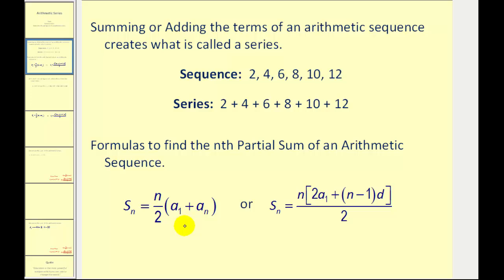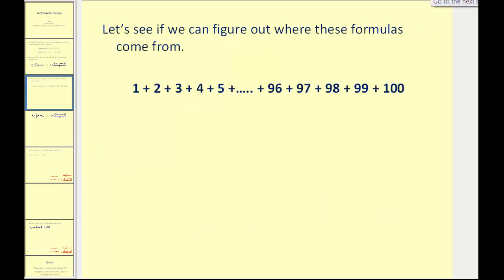Let's see if we can figure out where these formulas come from by considering this problem. Let's say we want to find this sum but we want to find an easier way to do it than just add all of these numbers. Well the first thing you might notice is that the series is an arithmetic series because each term increases by one so our common difference is positive one.